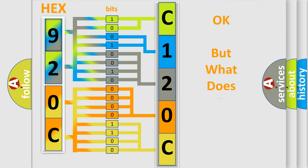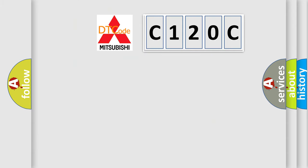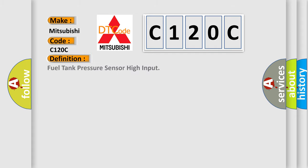We now know in what way the diagnostic tool translates the received information into a more comprehensible format. The number itself does not make sense to us if we cannot assign information about what it actually expresses. So, what does the diagnostic trouble code C120C interpret specifically for Mitsubishi car manufacturers? The basic definition is: Fuel Tank Pressure Sensor High Input.